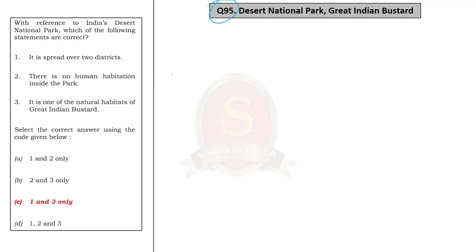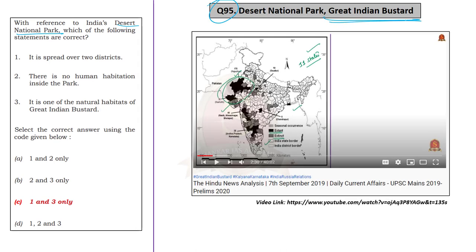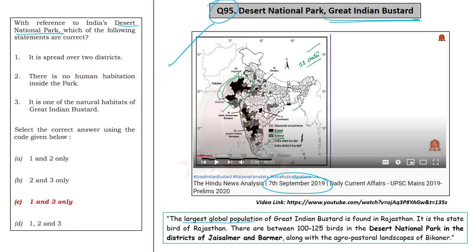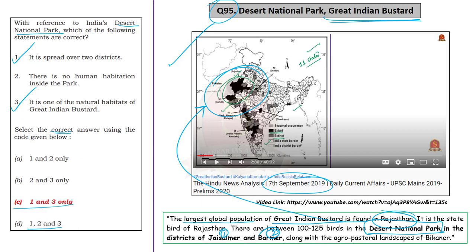The 95th question is with reference to the Desert National Park and the Great Indian Bustard. We discussed the Great Indian Bustard on 7th September 2019 in the Hindi News Analysis, focusing on habitat fragmentation. We specifically mentioned that the largest global population of Great Indian Bustard is found in Rajasthan and that it is the state bird of Rajasthan. There are between 100 to 125 birds in the Desert National Park in the districts of Jaisalmer and Barmer, along with the agro-pastoral landscapes of Bikaner. So the Desert National Park is spread across two districts — Jaisalmer and Barmer of Rajasthan. With this information, we can say that the first and third statements in Question 95 are correct. Since the answer must contain Statements 1 and 3, only options C and D qualify, increasing our probability of correctly attempting to 50%.